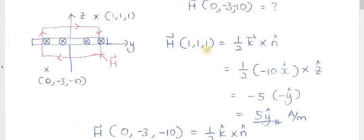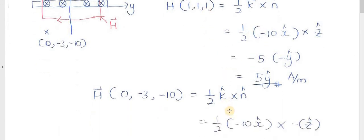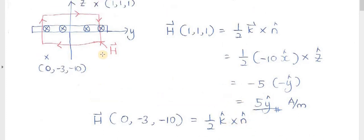And next one is this one, (0, negative 3, negative 10), same thing. But for this one, the unit vector normal n will be pointing downward.